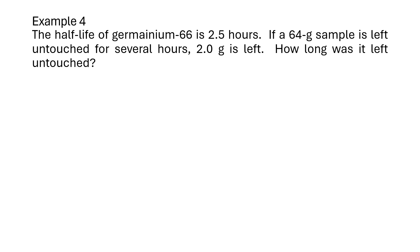So we're going to go from 64 grams to 2.0 grams. We're going to take 64 and divide it by 2. Divide by 2 and we get 32 grams. Divide that by 2 again and we get 16 grams. Divide it by 2 and we get 8 grams. Divide it by 2 and we get 4 grams. Divide it by 2 and we get 2 grams.